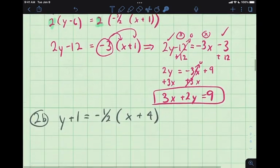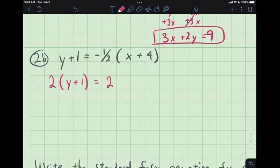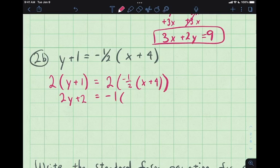Here's another example. y plus 1 equals 1 half, negative 1 half times x plus 4. So, just like from before, our first step is to multiply by that denominator. Make it go away. So, in this case, our denominator here was 2. We have 2y plus 2 equaling negative 1 times x plus 4. Keep simplifying. 2y plus 2 equals negative x plus 4.